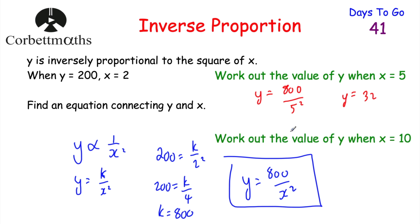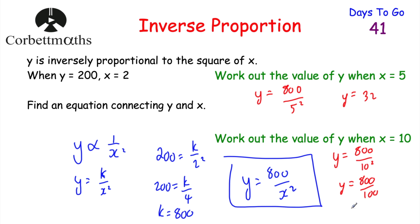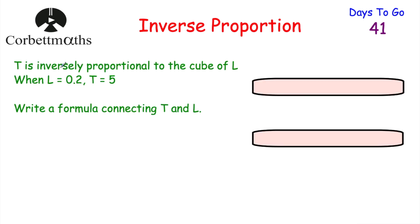For part C, find Y when X = 10. The value of X has doubled, and since it's inverse proportion Y should decrease. Y = 800 divided by 10 squared = 800 divided by 100 = 8. As X increased, Y decreased — well done if you got 32 and 8.